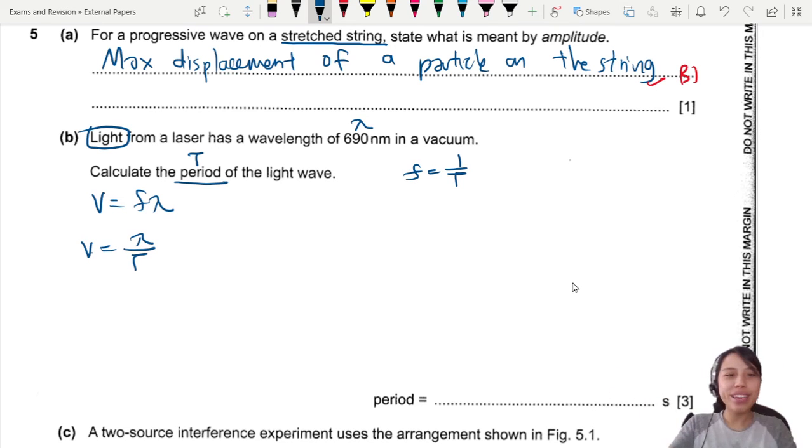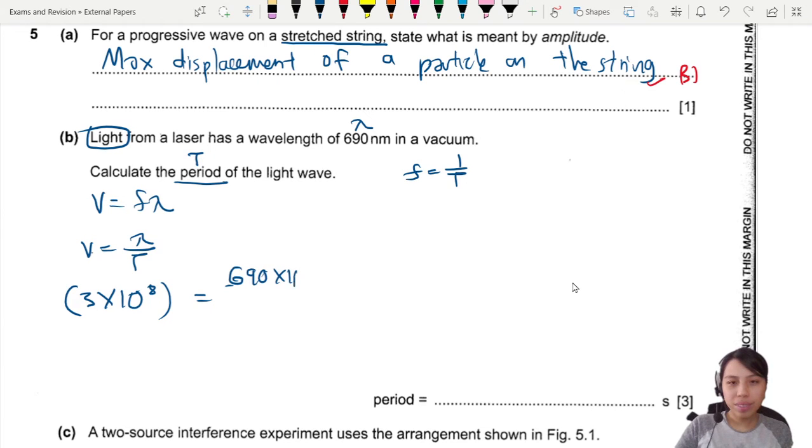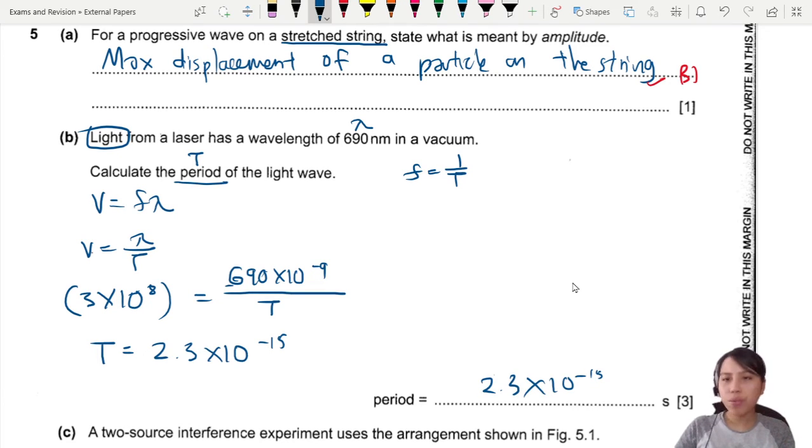Yes, this is light, electromagnetic wave, so the speed of light is 3 times 10 to the 8. If you don't memorize this, check the data formula sheet. So 690 nanometers must convert: times 10 to negative 9. Period at the end here gives us 2.3 times 10 to negative 15. Everything's in 2 significant figures.